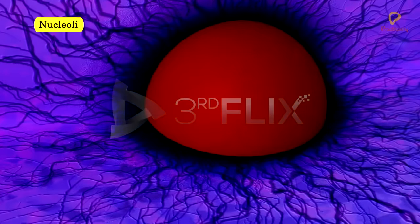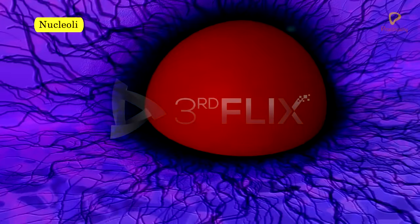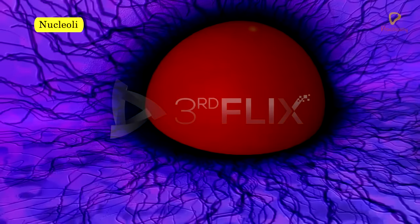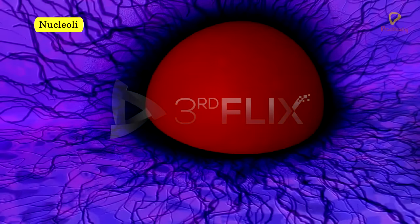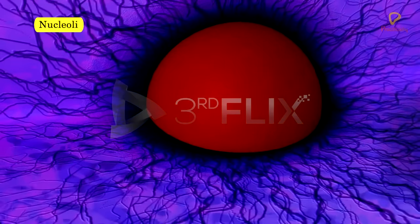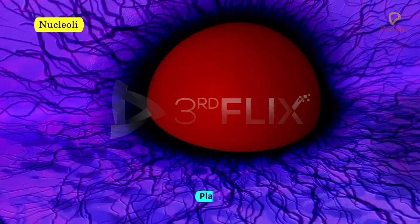Nucleolus. The nucleoli are spherical structures present in the nucleoplasm. Nucleolus is a membraneless, darkly stained, rounded structure. Nucleolus is also called plasmosome.